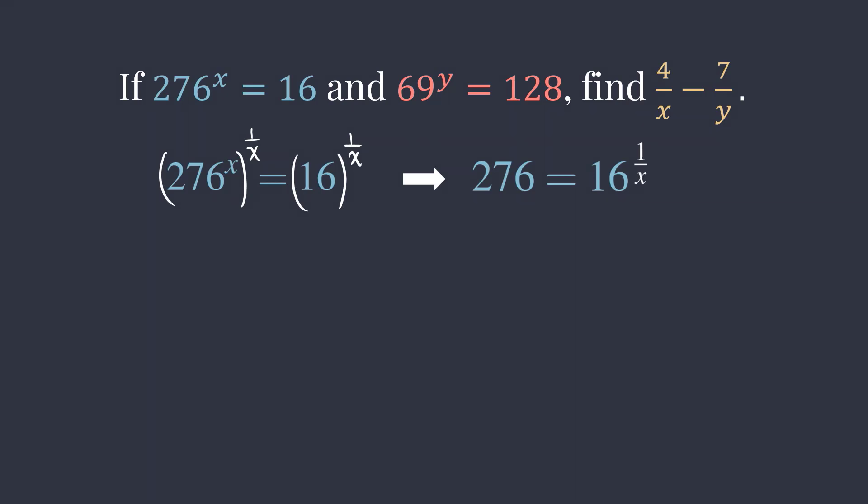Similarly, for the equation 69 to the y equals 128, we raise both sides to the 1 over y. The equation becomes 69 equals 128 to the 1 over y.